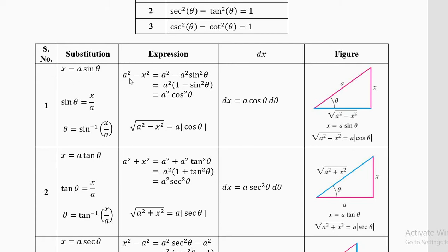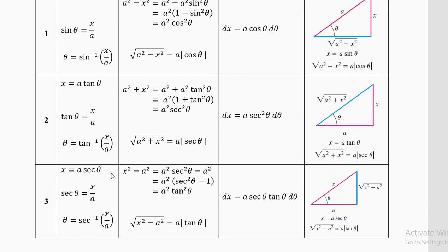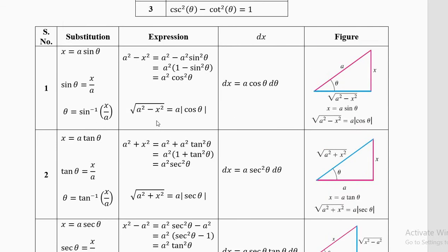For each scenario, use the corresponding substitution: if you have (a² − x²), put x = a sinθ; if you have (a² + x²), try x = a tanθ; if you have (x² − a²), try x = a secθ, where a is some real number.